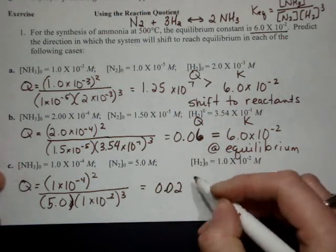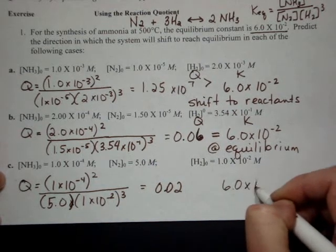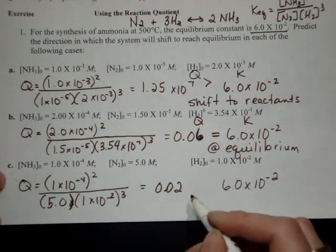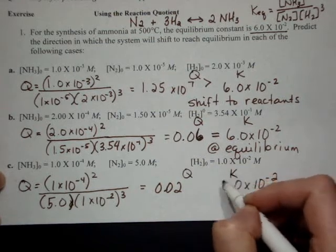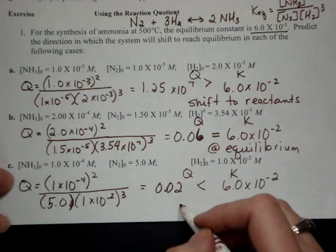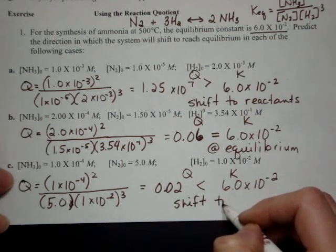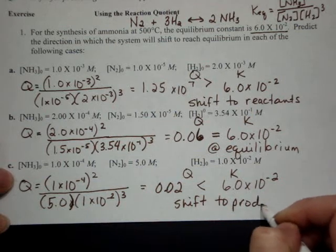I get 0.002, comparing that with K. 0.002 is less than K, so the system is not at equilibrium. It needs to shift to the right or shift to the products in order to make some more.